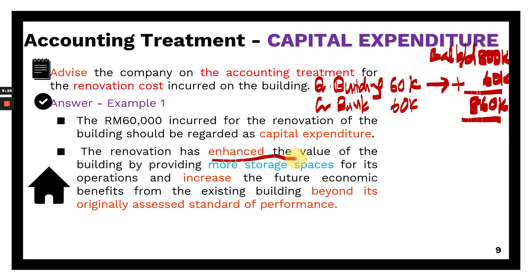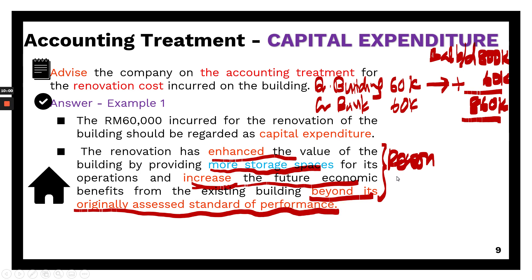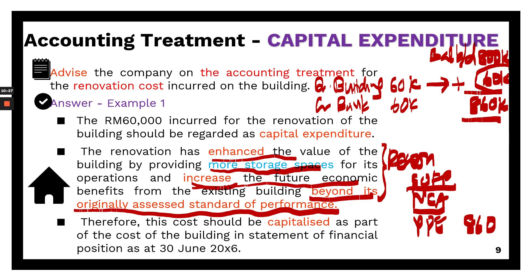The renovation has enhanced the value of the building by providing more spaces, and therefore has increased the future economic benefits of the building beyond its originally assessed standards because there is now more storage. Therefore, this cost should be capitalized as part of the cost of the building. In the statement of financial position under non-current assets, the PPE will include the $60,000 — so $800,000 plus $60,000 equals $860,000 — meaning the cost is capitalized as part of the cost of the PPE.